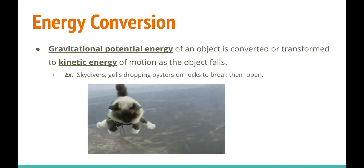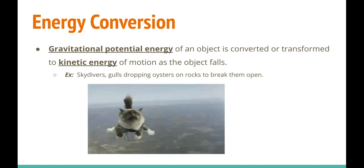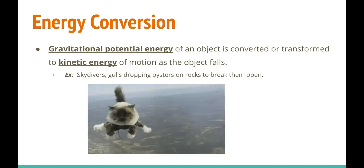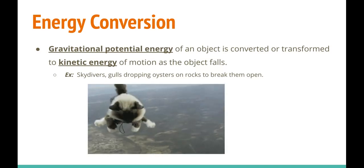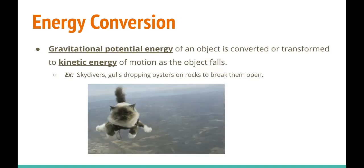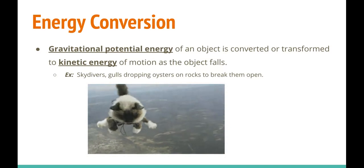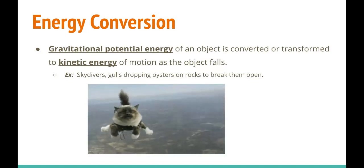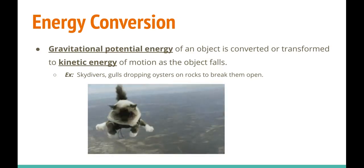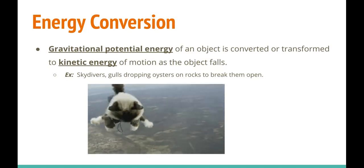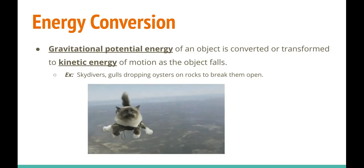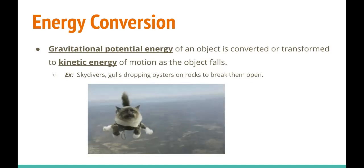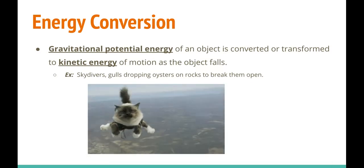Gravitational potential energy — remember, that's the potential energy a system can lose or transfer based on its height: mass times gravity times height. Gravitational potential energy of an object is converted into kinetic energy of motion as that object falls. As an example, this would apply to skydivers: you can calculate how much potential energy a skydiver has at their maximum height, and however much potential energy you calculate there should equal the kinetic energy at the end of their trip, more or less.